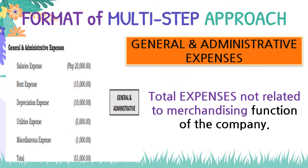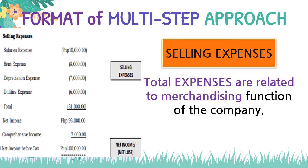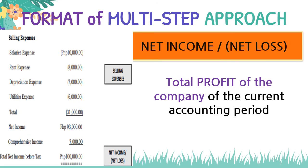The next part is general and administrative expenses — total expenses not related to merchandising. Then we have selling expenses — total expenses related to merchandising. These two are listed separately. Finally, we have net income or net loss: the total profit of the company for the current accounting period. We deduct selling expenses and administrative expenses from gross profit to get the net income or net loss.